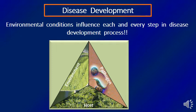If we break or affect one of these three factors, we can manage or make the plant resistant to disease. These three factors are represented as a triangle — the disease triangle. One side is the pathogen, the second is the environment, and the third is the host. To achieve a successful disease, we must have a susceptible host, an aggressive pathogen, and favorable environmental conditions.